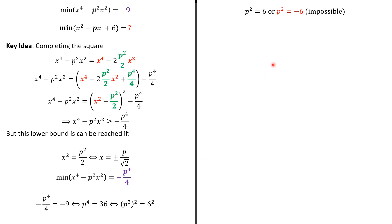So, we have two possibilities. Either p² is 6 or p² is -6. But, the latter case is ruled out since p² is positive. So, p² is 6.